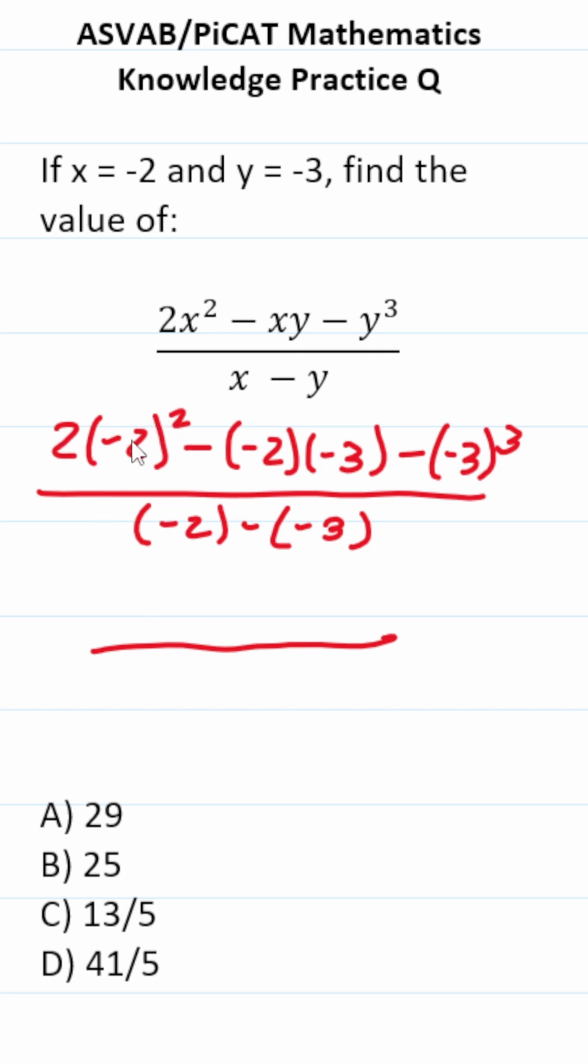Negative 2 squared is negative 2 times negative 2. That's positive 4 times 2 is 8. Negative 2 times negative 3. Again, a negative times a negative is positive. That's positive 6, but we have this minus sign there.